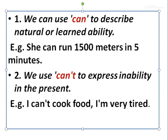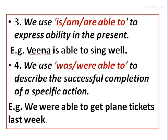We use 'can't' to express inability in the present. Example: I can't cook food — I am very tired. We use 'is' or 'am able to' to express ability in the present. Example: Veena is able to sing well. We use 'was' or 'were able to' to describe the successful completion of a specific action. Example: we were able to get plane tickets last week.